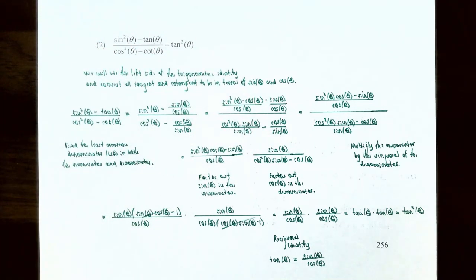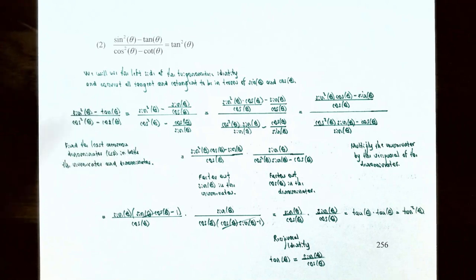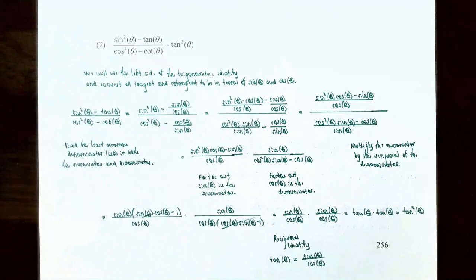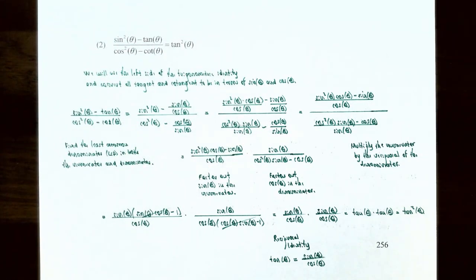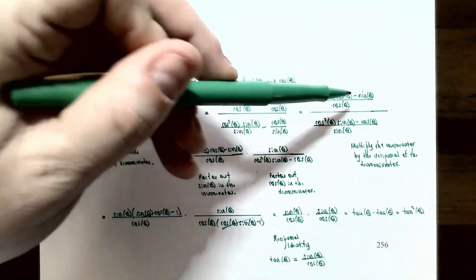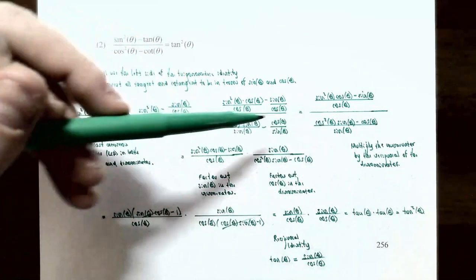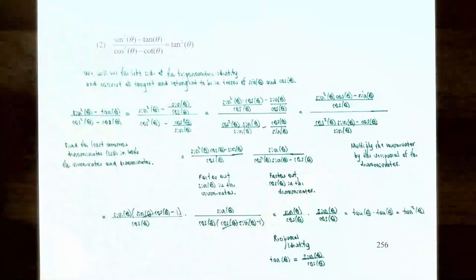Now do the same in the denominator of the larger fraction. cos²θ is really over 1, so multiply by sin θ to get the LCD of sin θ: cos²θ · sin θ / sin θ. The second fraction, cos θ / sin θ, already has the LCD, so it stays the same. Subtracting gives: numerator is (sin²θ · cos θ − sin θ) / cos θ, and the denominator is (cos²θ · sin θ − cos θ) / sin θ. Now we have one fraction in the numerator and one in the denominator of the larger fraction.